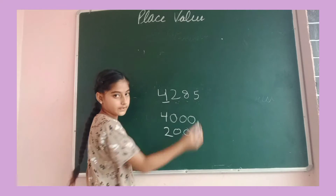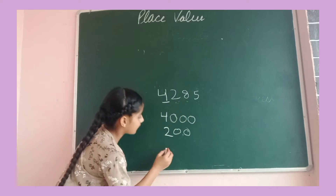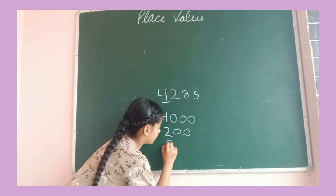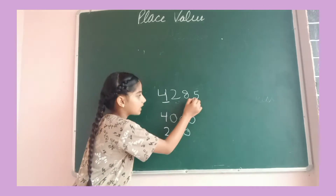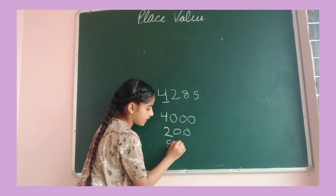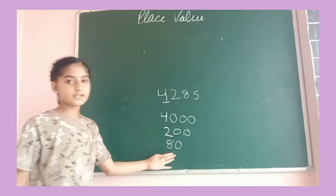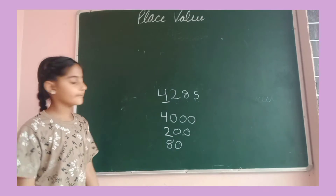Same way for digit 8: I will write 8, count the number of digits after it, add that many zeros, and here is the place value of 8.